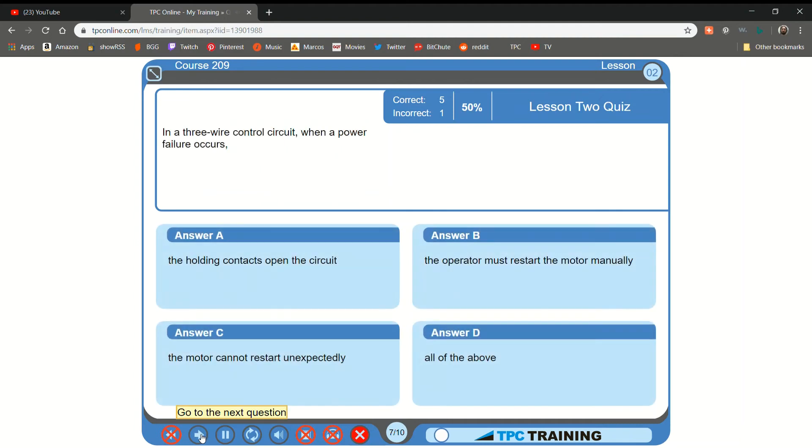In a three-wire control circuit, when a power failure occurs... A. The holding contacts open the circuit... B. The operator must restart the motor manually... C. The motor cannot restart unexpectedly... D. All of the above... That is correct.